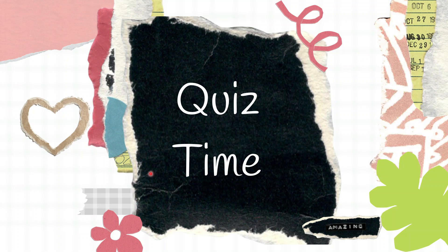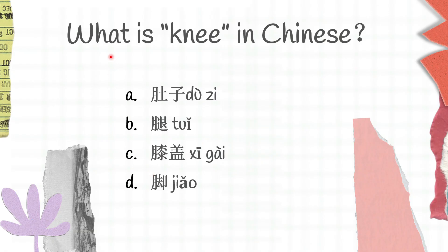It's finally quiz time again, and the content for today's quiz will be four caps from lesson 58. The first question: what is knee in Chinese? We have A, duzi; B, tui; C, xīgài; D, jiǎo.